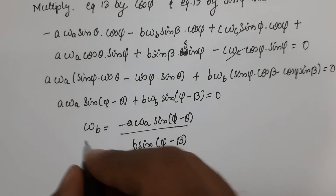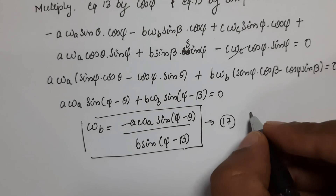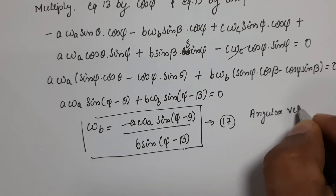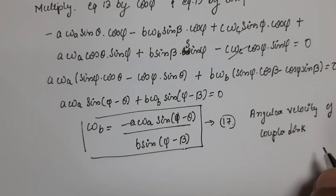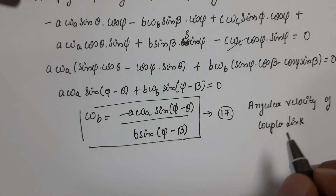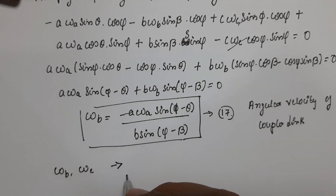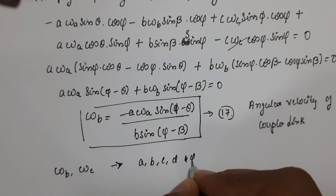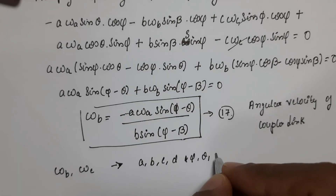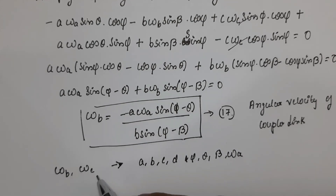To calculate the angular velocity of the coupler link and the output link, the necessary quantities required are: the link lengths a, b, c, d; the angles φ, θ, and β; and the input angular velocity ω_a. All these are required to calculate ω_b and ω_c.